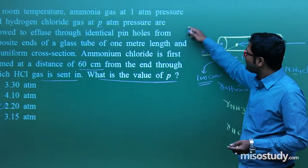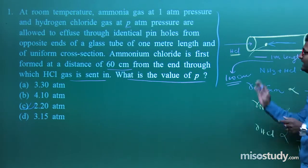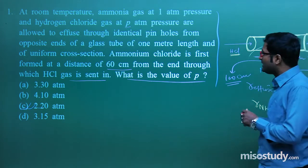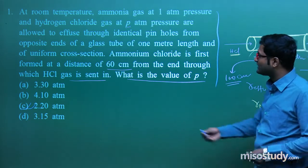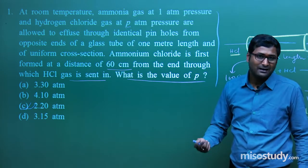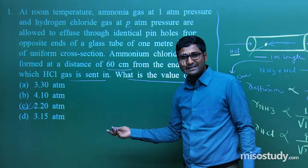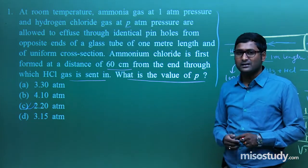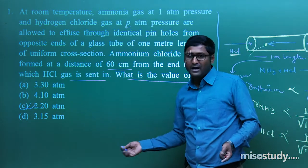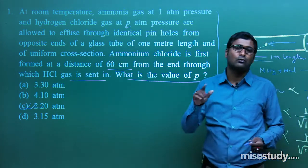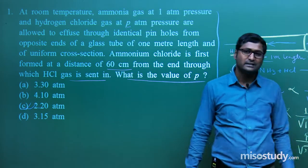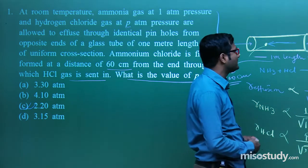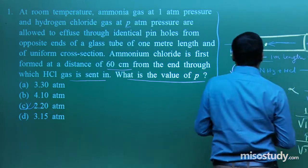The question seems very lengthy but the solution is not so lengthy. We don't need to find a detailed solution. The key is: HCl travels 60 cm, NH3 travels 40 cm, and the rate of effusion equals P upon root M. If you solve, you can easily find the value of pressure.